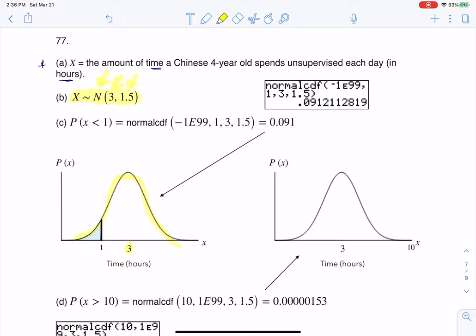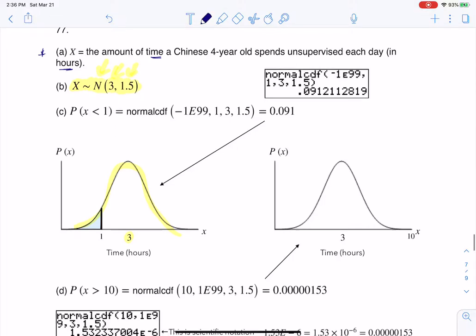So if I wanted to scale this axis, because we typically have three deviations above and three deviations below, I would use the 1.5 to help me scale it. So I just keep adding 1.5 to get the three deviations above, and I would subtract 1.5 to get the deviations below.